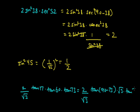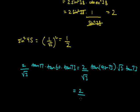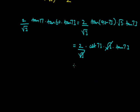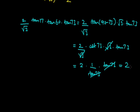So we have (2/√3) · cot73 · tan60 · tan73. We know tan60 = √3, and since tan73 and cot73 are reciprocals of each other, they cancel. The √3 and √3 also cancel, giving 2 · 1 = 2 as the answer for this part.